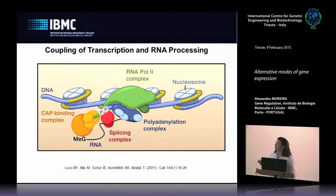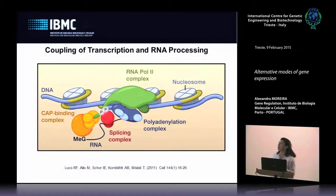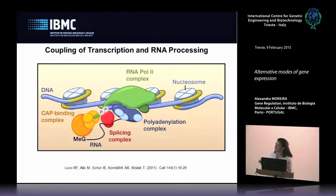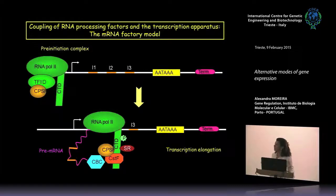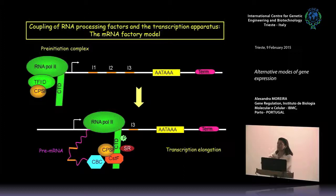Bear in mind that pre-mRNA processing is mostly coupled to transcription. That means that during transcription by RNA Pol2 you have processing of the pre-mRNA occurring at the same time — capping, splicing, and also polyadenylation. It's mainly through the CTD of RNA Pol2 that factors involved in processing of the pre-mRNA are targeted to it. Notably, when RNA Pol2 binds to the promoter to form the pre-initiation complex, you already have one of the cleavage and polyadenylation specificity factors that will act on the three-prime end of the RNA at the end of the gene.